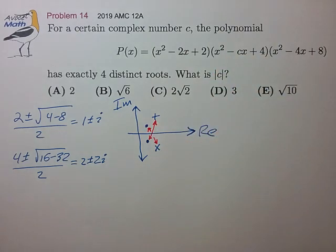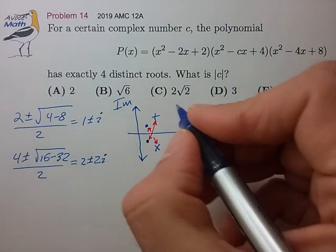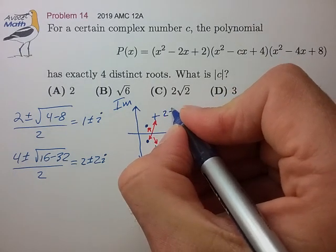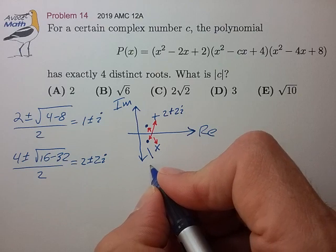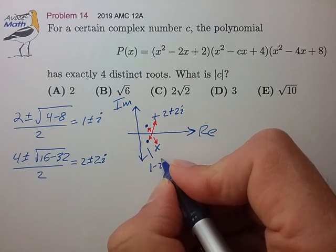I don't think it really matters, so let's go ahead and do this pair with 2 plus 2i and this bottom root, 1 minus i.